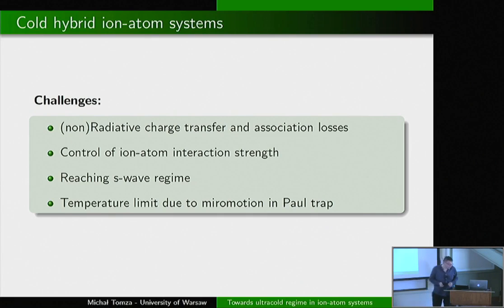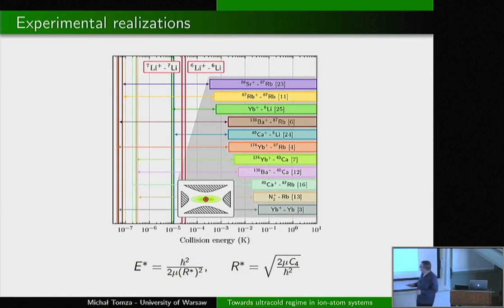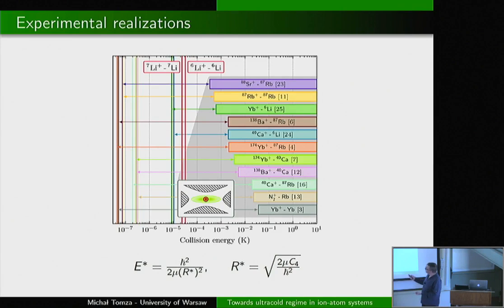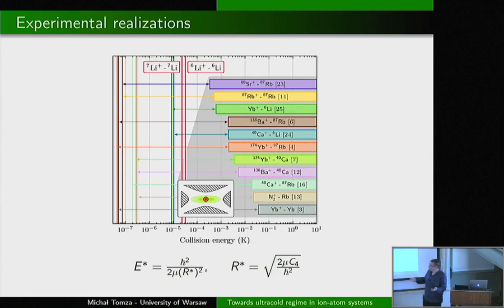We combined the experiments realized in the cold regime. The lowest temperatures achieved are around millikelvin. Comparing to the characteristic energy scale for ion-atom systems and the height of the P-wave barrier, even in the best cases—systems with the smallest reduced mass—we are at least two orders of magnitude from the S-wave regime. For most systems, we are five or six orders of magnitude away. This is a huge gap that everyone here is trying to close.